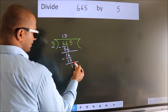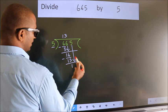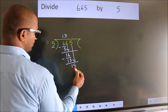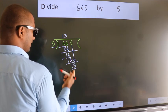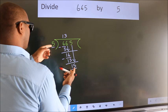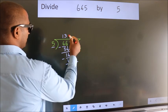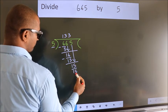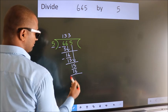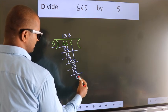After this, bring down the next number. So 5 down. So 15. When do we get 15 in the 5 table? 5 times 3 is 15. Now we subtract. We get 0.